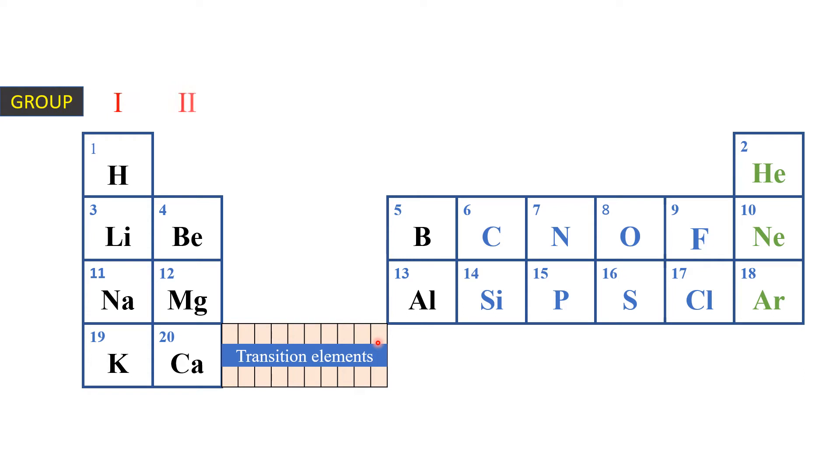The periodic table has what we call groups. When you look at groups, we shall realize that we have only eight groups, although sometimes they might name them differently. We have group 1, group 2, group 3, up to group 8. Usually we prefer using the Roman numerals. So groups are basically these vertical columns.